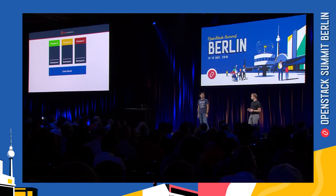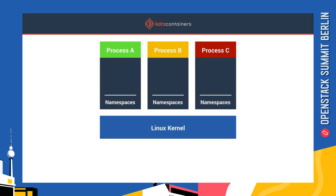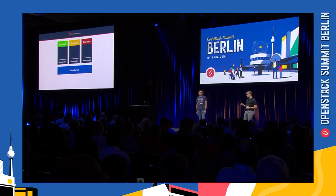First and foremost are namespaces. This feature is leveraged to isolate applications. Using namespaces — nothing to do with containers, just happens to be used by containers — we're able to give applications a view that they're the only ones existing on the system. They can only see their own network devices, their volumes, their process trees. So using this, it makes it look like they're the only ones on the system.